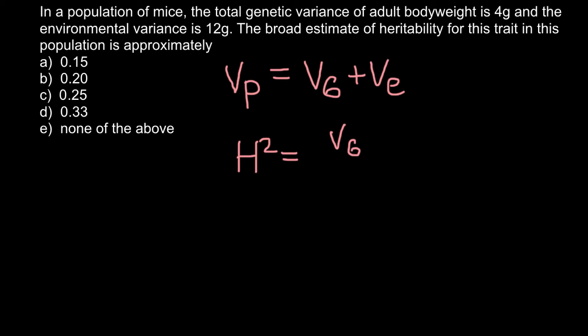And now we can just use our numbers that we are given in our problem. So variance genetic is 4 grams, so we can put it here, and variance environmental is 12 grams.